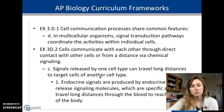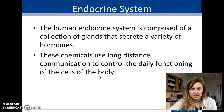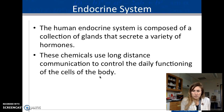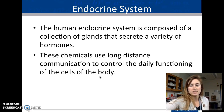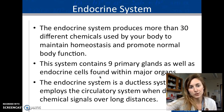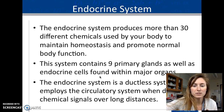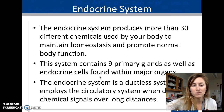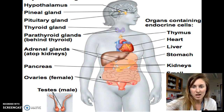The endocrine system is composed of glands that secrete hormones — an example of long distance signaling. There are over 30 different chemicals used to maintain homeostasis and carry out body functions. There are nine major glands, and it operates on a ductless system, releasing directly into the bloodstream.